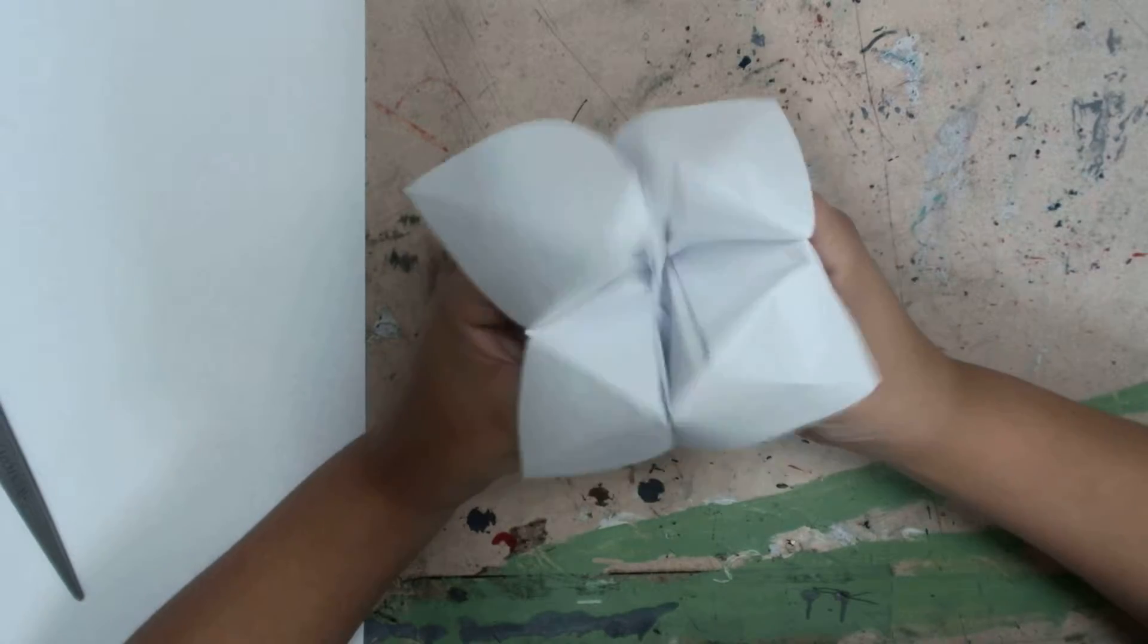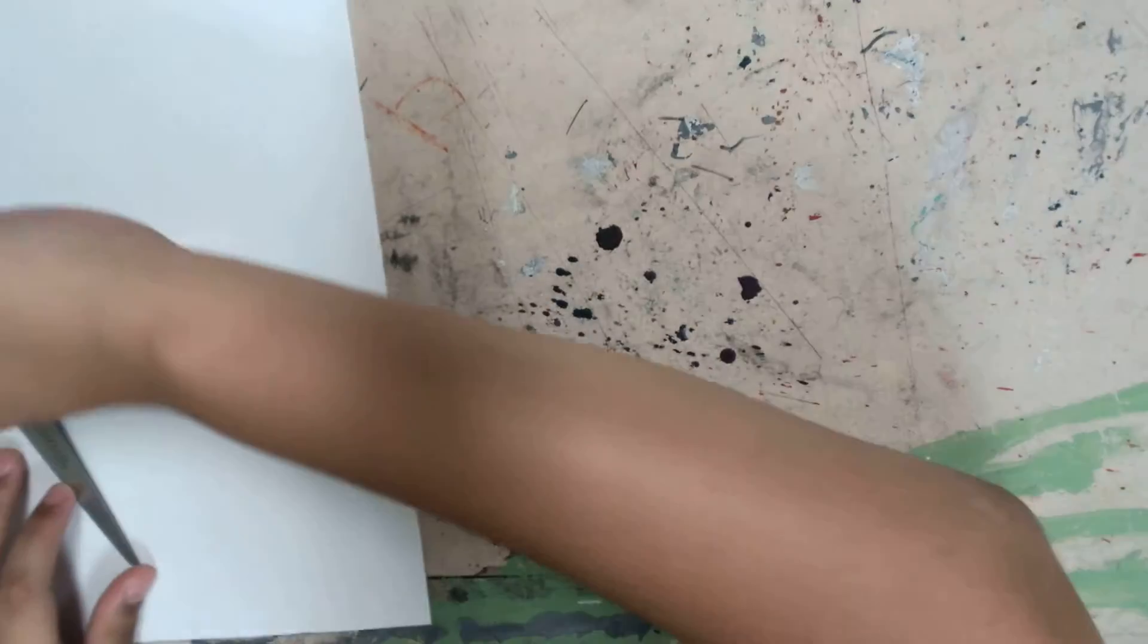Hey, today I'm going to show you how to make a fortune teller. The materials you need are some scissors and a piece of paper.